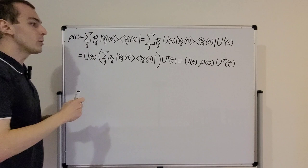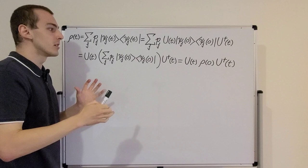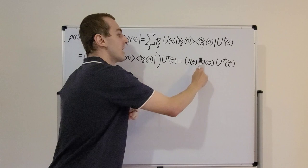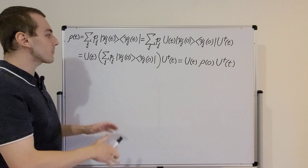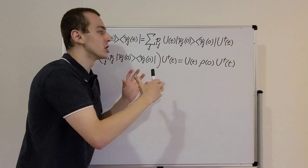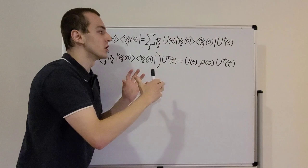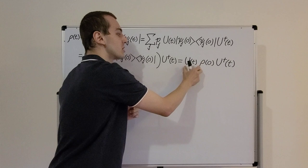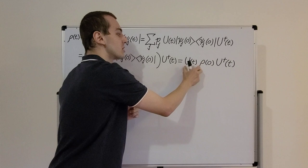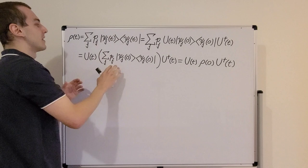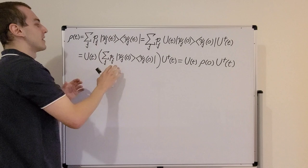So how do we describe the time evolution of this density operator? We sandwich it between these unitaries. This unitary is responsible for time evolution in quantum mechanics. If we were just dealing with a state, we would act with the time evolution unitary operator. But for a density operator, we sandwich it between the unitary operator and its Hermitian adjoint, denoted by the dagger symbol.